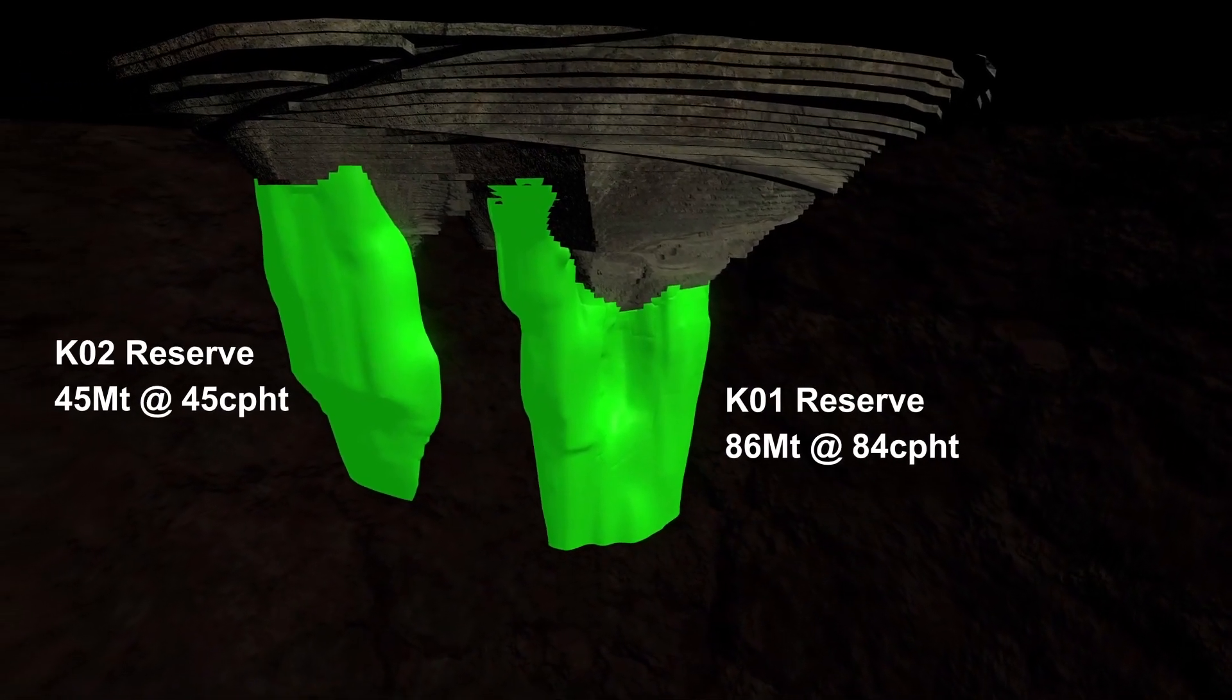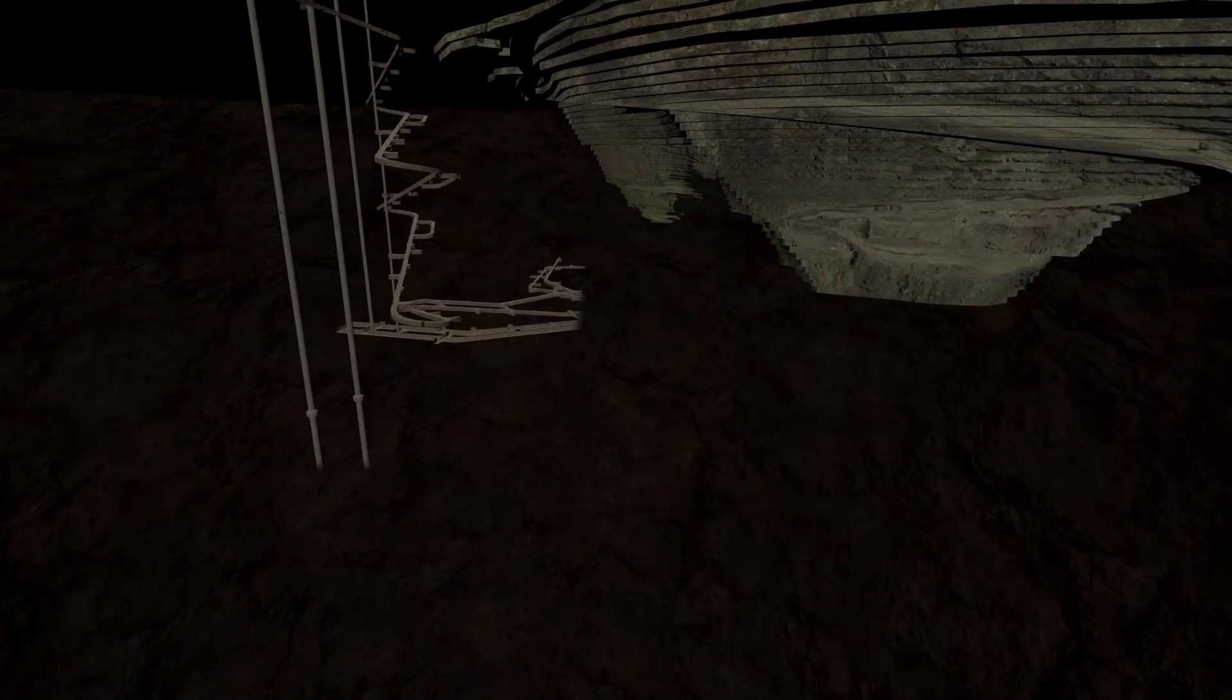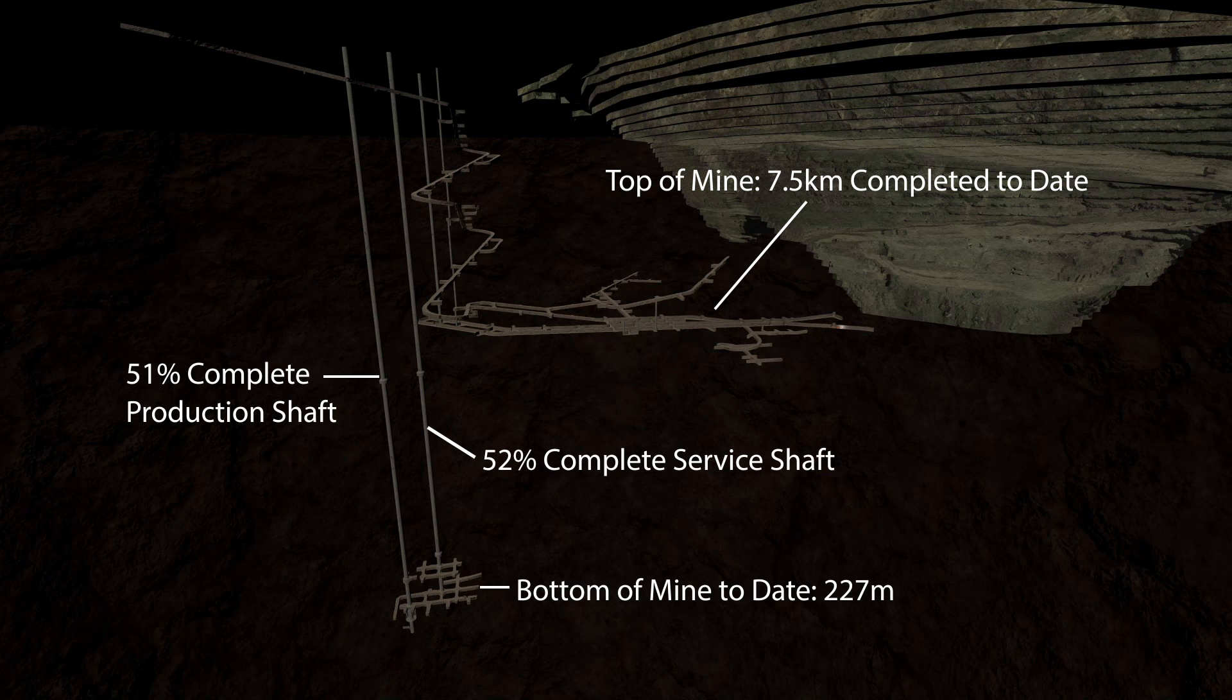At full production of 5.9 million tonnes per annum, an average of 3.5 to 5 million carats per annum will be yielded. The production shaft is currently undergoing equipping with the first stage commissioning due in 2022 and the service shaft will be commissioned in 2024.